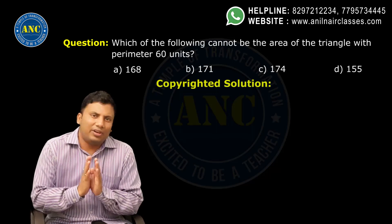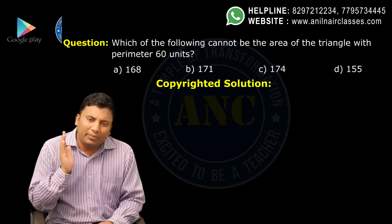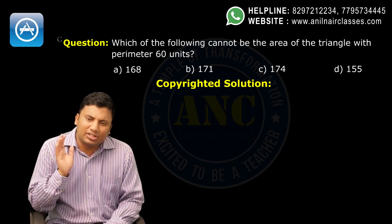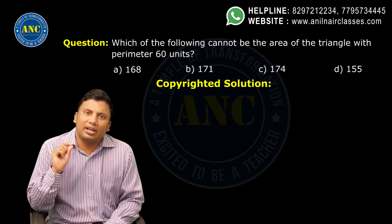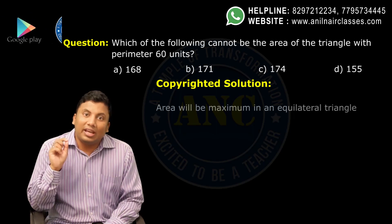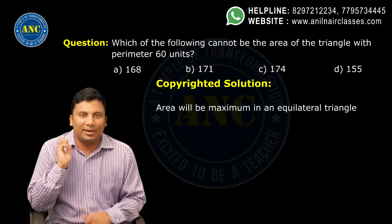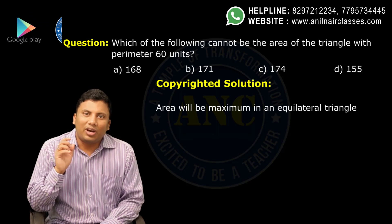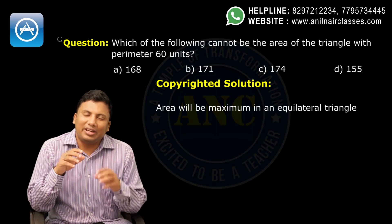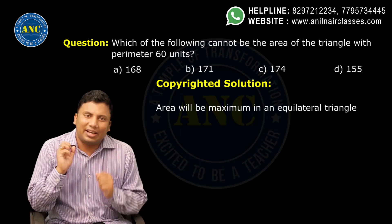Now see, the logical way to solve this question. Perimeter is given as 60 units. In which triangle will the area be maximum? Area will be maximum in an equilateral triangle. What we will do is take the worst case to be an equilateral triangle.